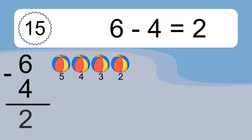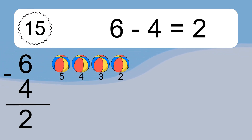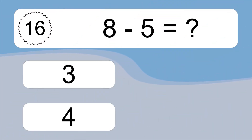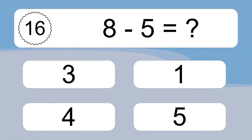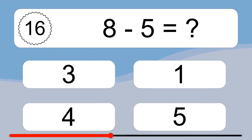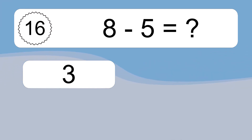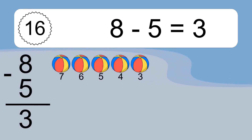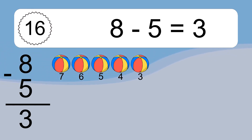6 minus 4 equals what? 6 minus 4 equals 2. Let's count it. 5, 4, 3, 2. 8 minus 5 equals what? 8 minus 5 equals 3. Let's count it. 7, 6, 5, 4, 3.